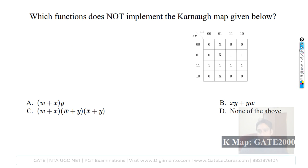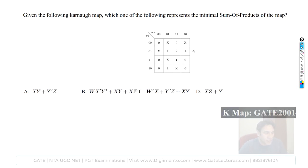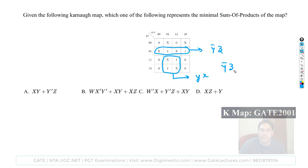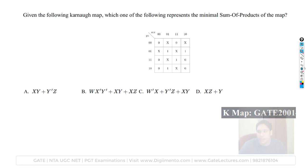Next question: find the minimal SOP for the given K-map. Two sub-cubes are possible. The first sub-cube represents Y-complement·Z, and the second represents X·Y. Therefore the expression is Y-complement·Z plus XY, which directly matches option A — an easy, straightforward question.